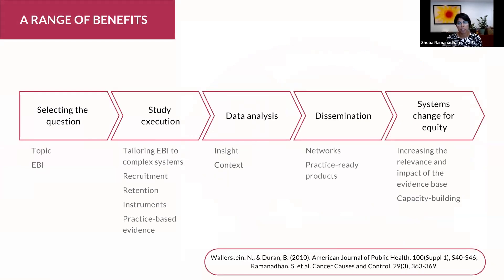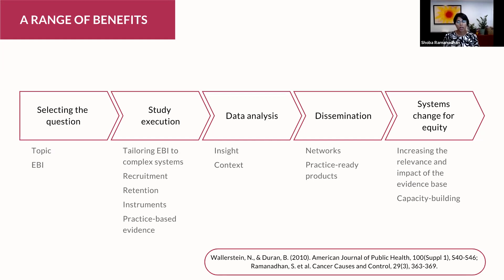If we're doing this, we can expect a range of benefits. In terms of selecting the question, we can improve our ability to find a topic that resonates and meets a community need, and do a better job of selecting an evidence-based intervention likely to succeed. For study execution, we can leverage diverse expertise to tailor EBIs to complex systems. We can improve recruitment and retention — both because rich stakeholder networks can be tapped and because alignment between what folks are looking for and what they want to participate in is likely to be higher. We can improve our instruments by ensuring they are context-appropriate, and we have an opportunity to bring practice-based evidence into the literature and ensure the field moves forward.